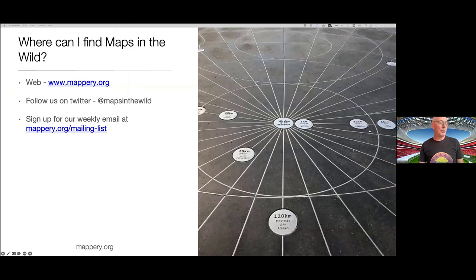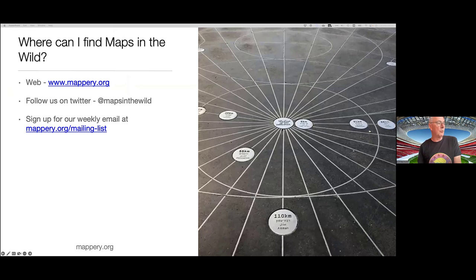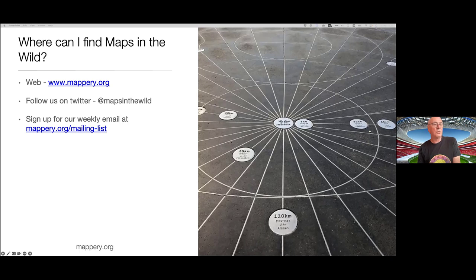By now you'll probably be asking: where can I find maps in the wild? Well, you could go to our website at mappery.org. You could follow us on Twitter at Maps in the Wild, or sign up for our weekly email at mappery.org/mailinglist. In any of those places you'll get a daily dose of one map in the wild — sometimes like this compass representation showing distances and directions from the port of Jaffa near Tel Aviv to Jerusalem, to Amman, and all sorts of places around the world.